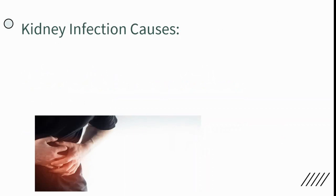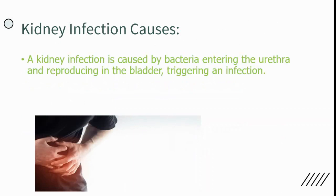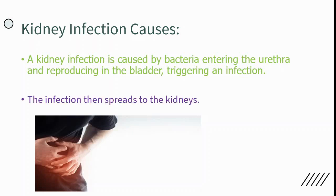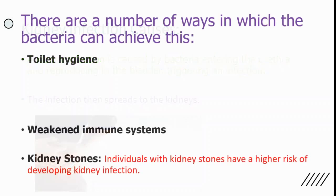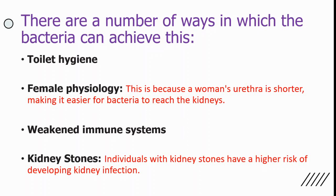Kidney infections are generally caused by bacteria entering the urethra and reproducing in the bladder, then triggering an infection. When it spreads to your kidneys, it causes a kidney infection. There are a number of ways bacteria can achieve this: poor toilet hygiene, a weakened immune system, kidney stones, and female physiology — since a woman's urethra is shorter, making it easier for bacteria to reach the kidneys.